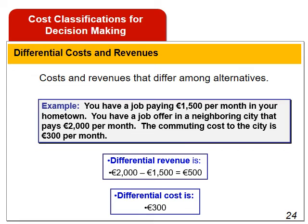Differential costs, or incremental costs, represent the difference in cost between any two alternatives. A difference in revenue between two alternatives is called differential revenue. Differential costs can be either fixed or variable. For example, assume you have a job paying 1,500 euros per month in your hometown, and you receive a job offer in a neighboring city paying 2,000 euros per month, with commuting costs of 300 euros per month. The differential revenue is 500 euros and the differential cost is 300 euros.